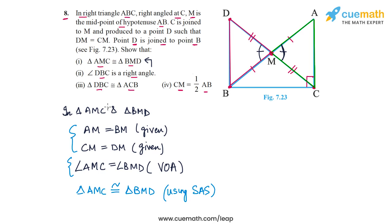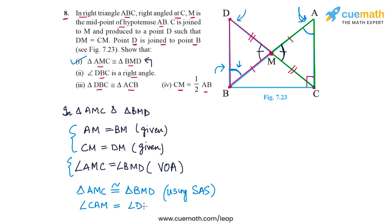Hence triangle AMC is congruent to triangle BMD using the SAS congruence criterion. This means all corresponding parts are equal. So angle CAM equals angle DBM by CPCT. One common mistake is taking the wrong corresponding angle — angle at A corresponds to this angle at B, specifically angle DBM.